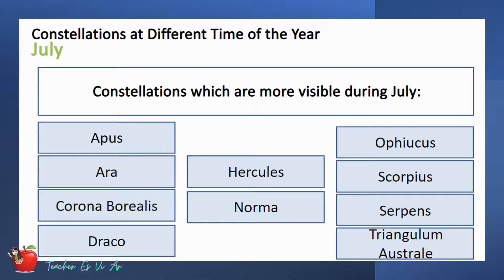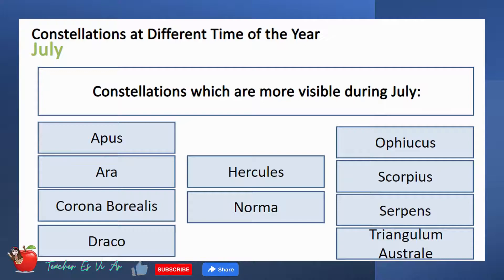These are the constellations more visible during July. There are more constellations visible during July: Apis, Ophiucus, Hera, Hercules, Scorpius, Corona Borealis, Norma, Serpens, Draco, Triangulum Australe.